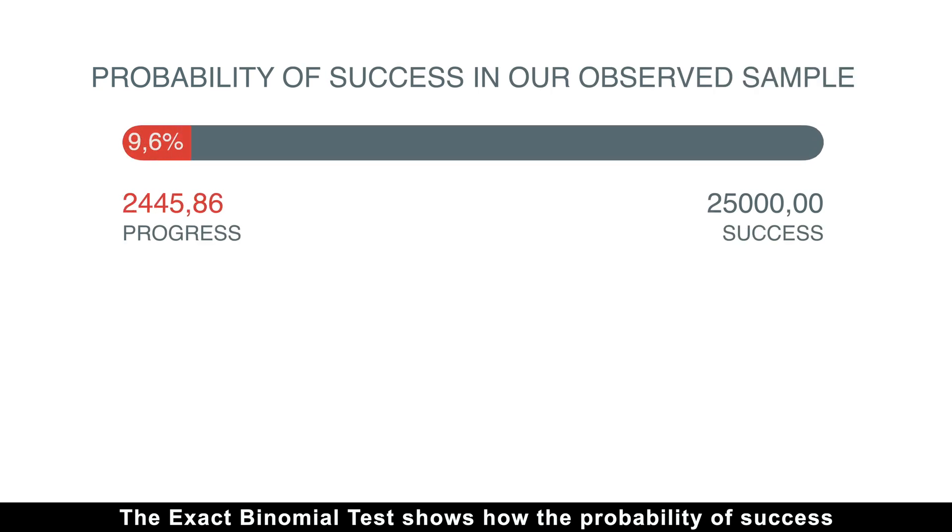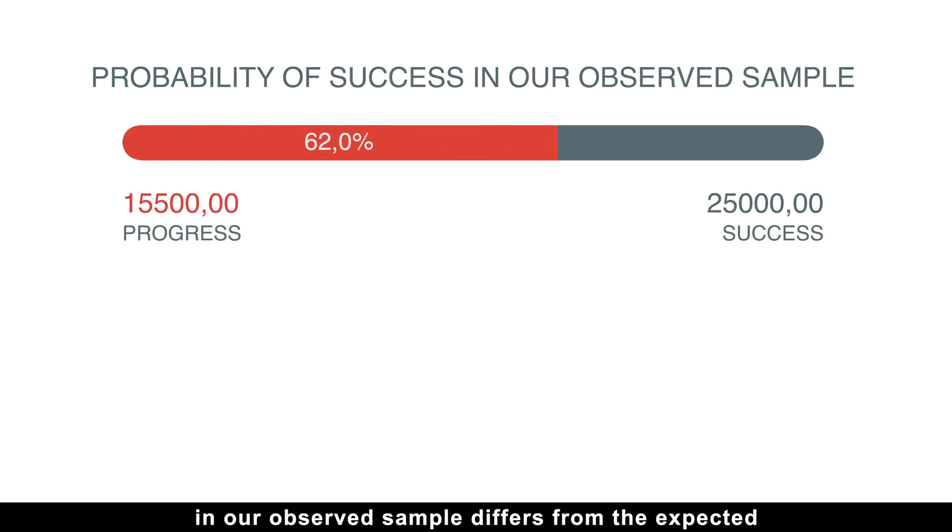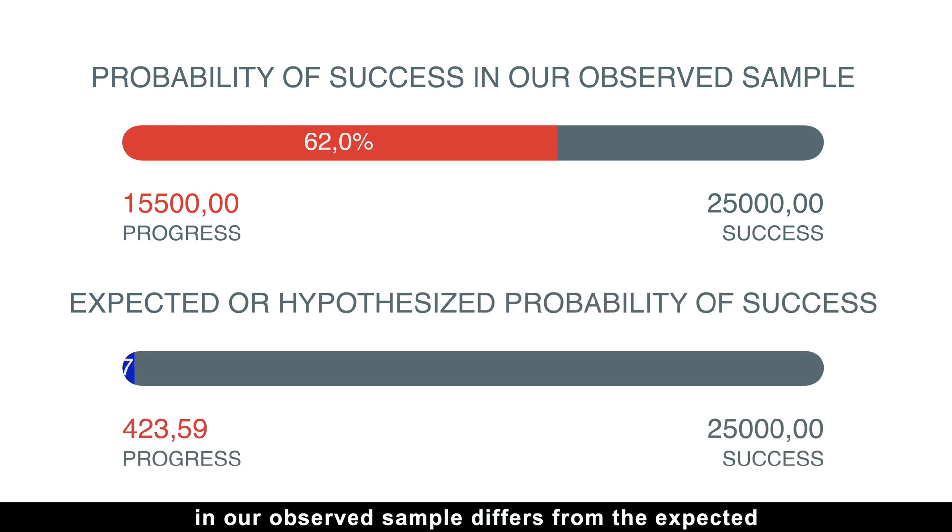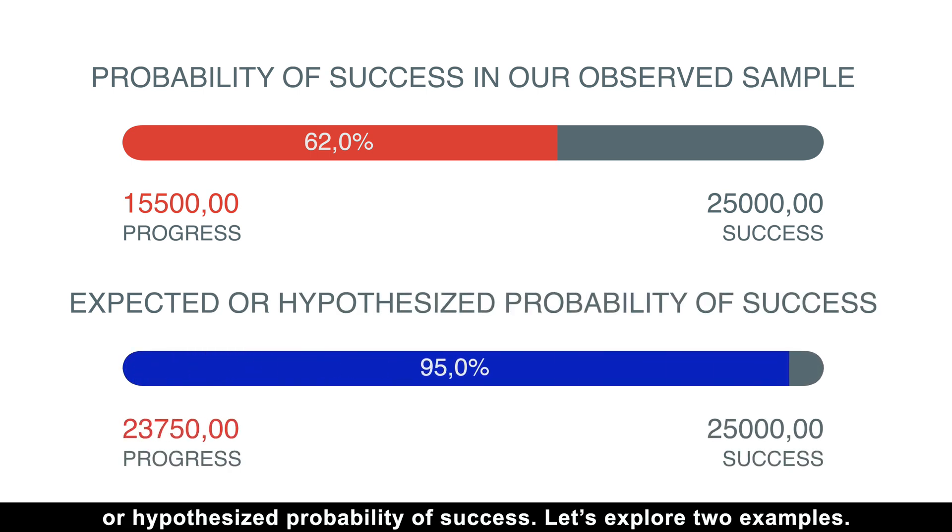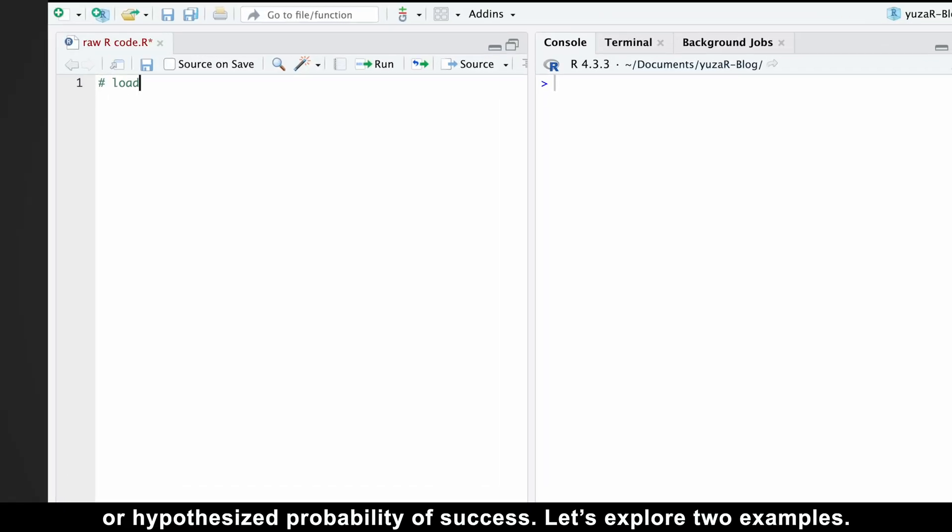The exact binomial test shows how the probability of success in our observed sample differs from the expected or hypothesized probability of success. Let's explore two examples.